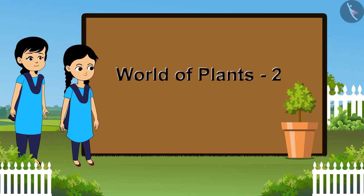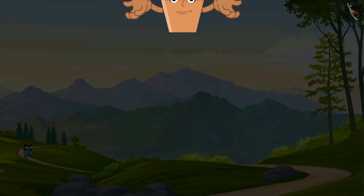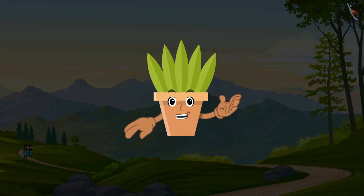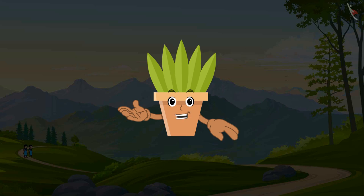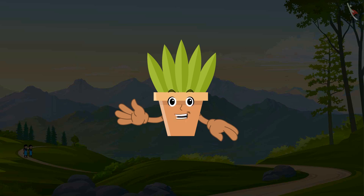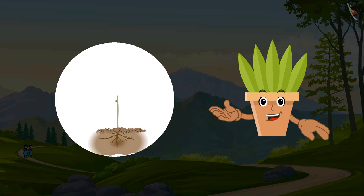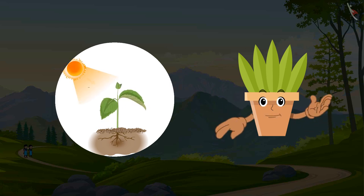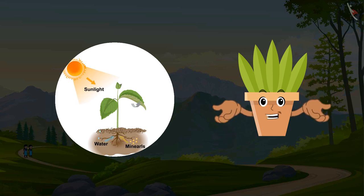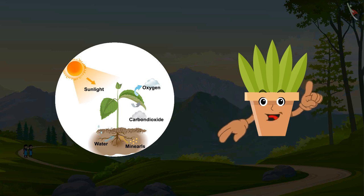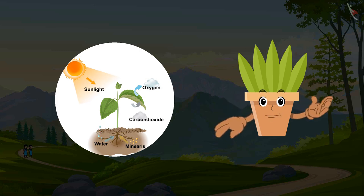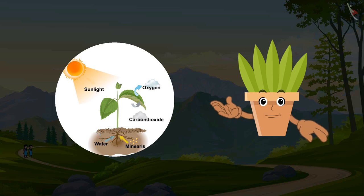World of Plants 2. Children, I am back again. There are many aspects about me that you still need to know. In the previous video, you had learned about living and non-living things, and also that living things require food to survive. You also learned that plants make their own food, which is called autotrophic nutrition. In this video, we will talk about the other two types of plant nutrition. Let us go back to Neeloo and Minoo again to know more about the nutrition of plants.